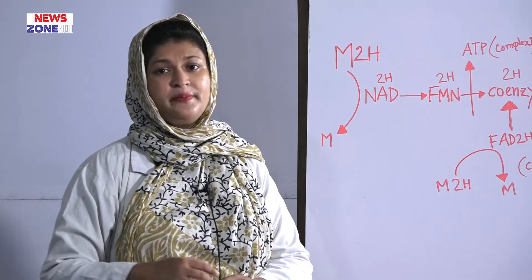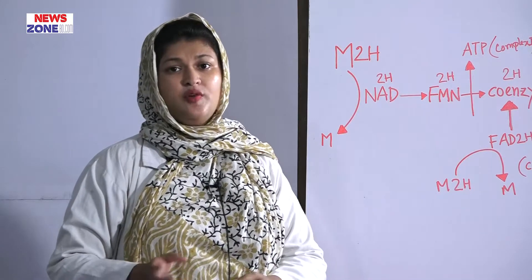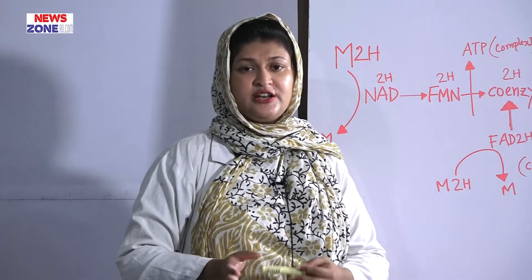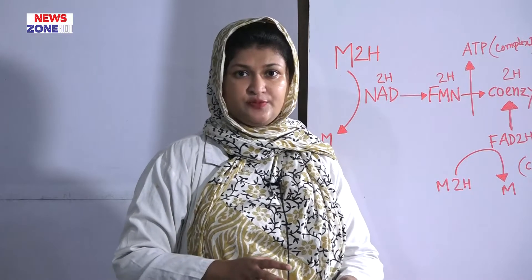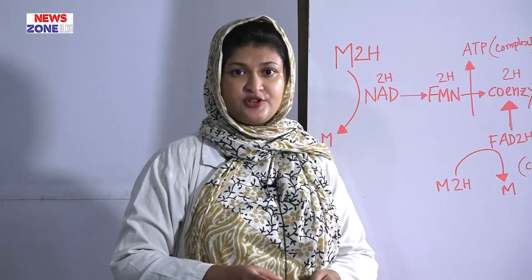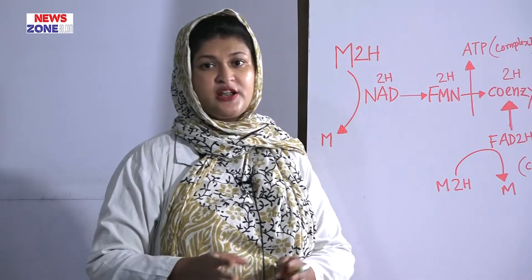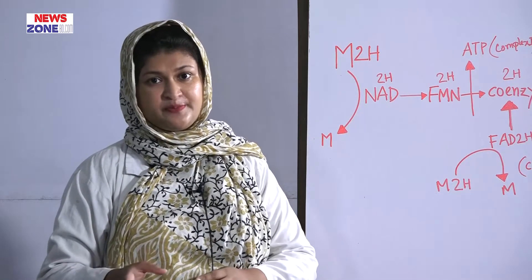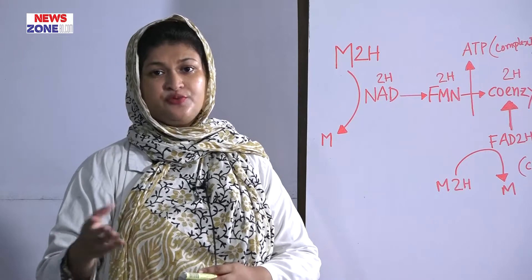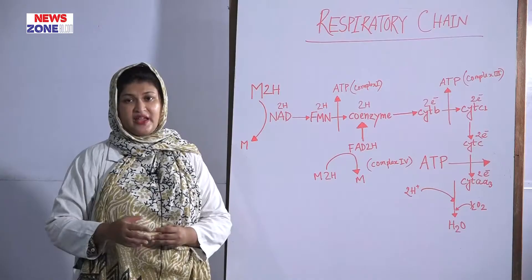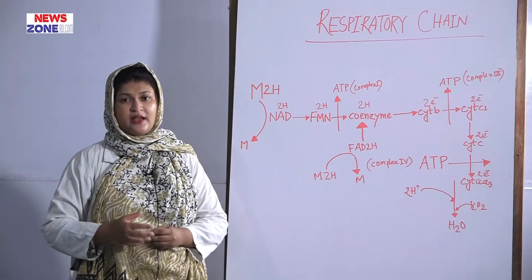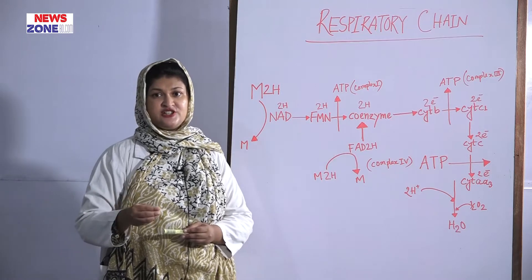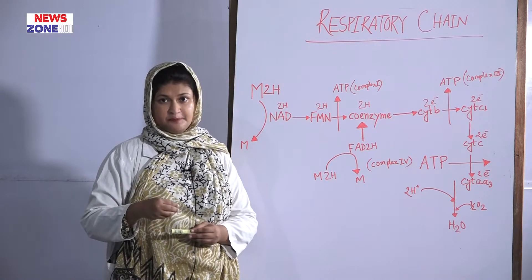In this chain, there will be oxidative phosphorylation. Oxidative phosphorylation means oxidation of the components of the respiratory chain, and phosphorylation means addition of a phosphate group to ADP to form ATP — adenosine triphosphate — which is the main energy currency for our body.